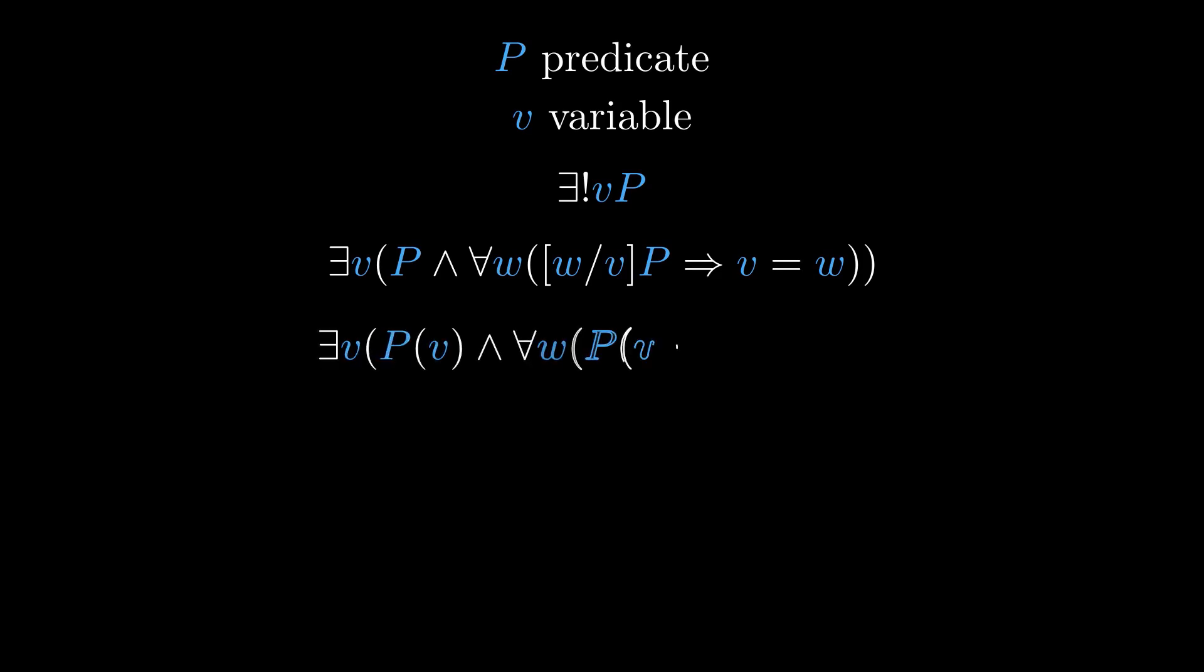I also want to introduce this expression, read as there exists a unique v such that P, where P is a predicate and v is a variable. We can define this in terms of the predicates we've seen, as follows. Here, w is a variable of our choice distinct from v and not otherwise appearing in the predicate P. Assuming P is a predicate in a single variable, we can also write this in our alternate notation, like so.